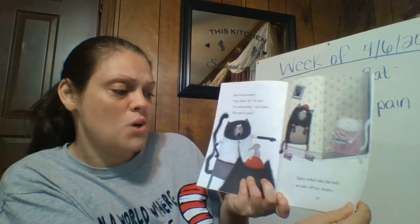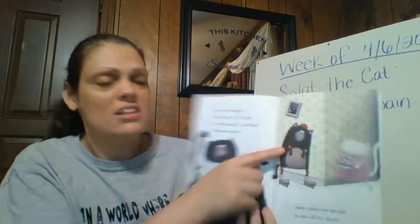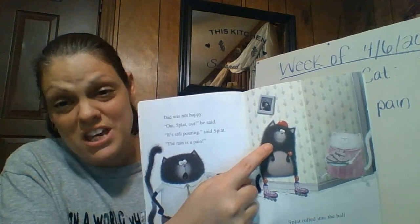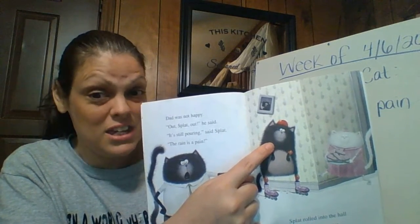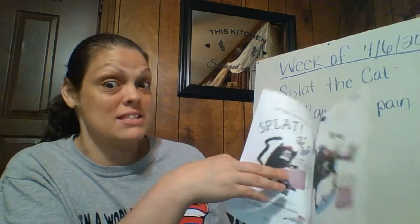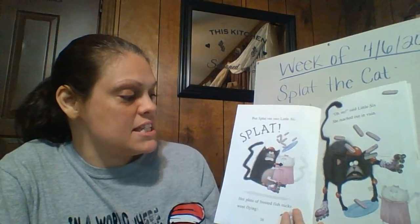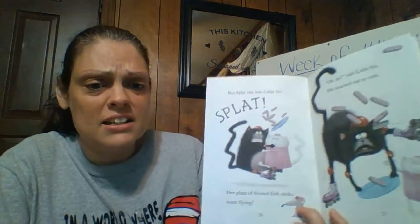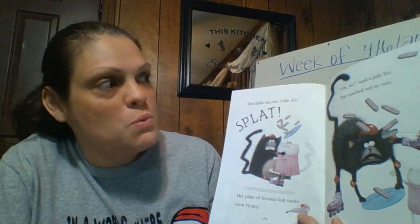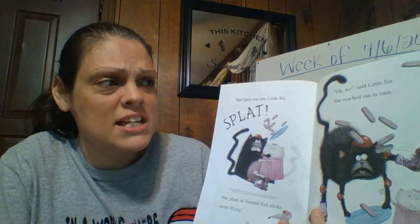Splat rolled into the hall to take off his skates. Now look at him — he looks so sad because it's raining outside and there's nothing he can do in the house. He just keeps making messes. But Splat ran into Little Sis. Her plate of frosted fish sticks went flying. Oh no! said Little Sis.